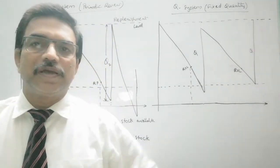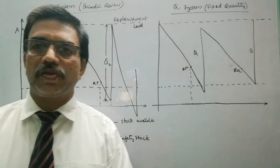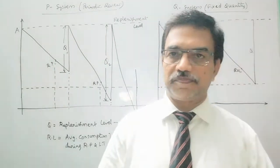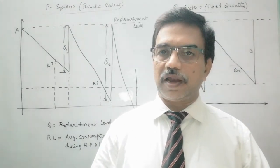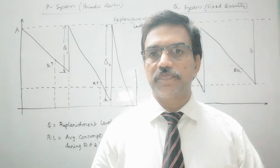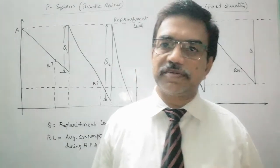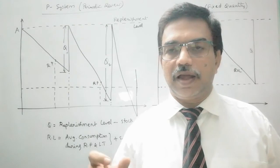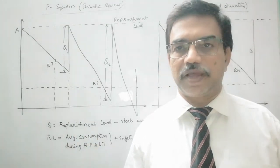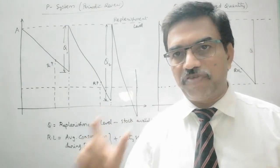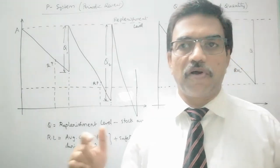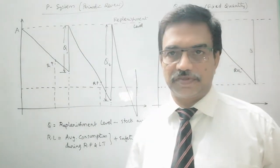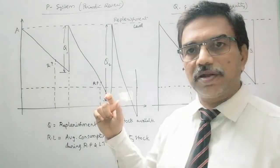P system means it is a periodic review system, that means the review period of inventory is fixed. The inventory levels of different types of items will be verified at a particular point of time every month, say. So after a fixed review period, the inventory levels of all items will be reviewed and orders will be placed for those items depending on the available quantities.